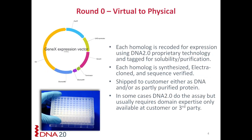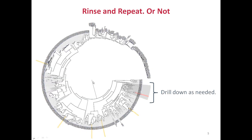We then synthesize and test them in the expression vector for whatever activity is relevant. Usually one is always a lot better than the others. Then we can either go back and drill further down in that particular area of sequence space, or we can just take the best one as-is and go forward with the protein engineering.